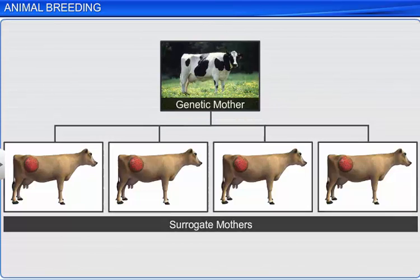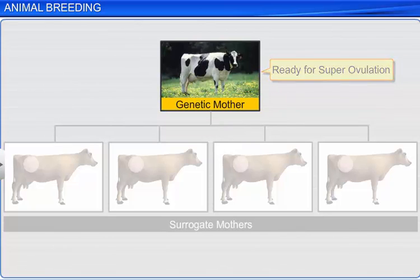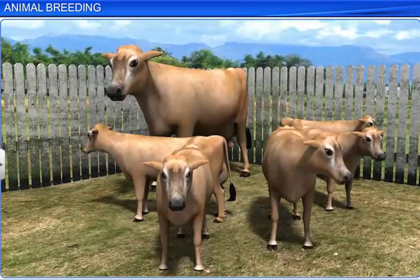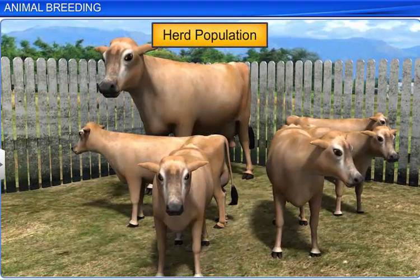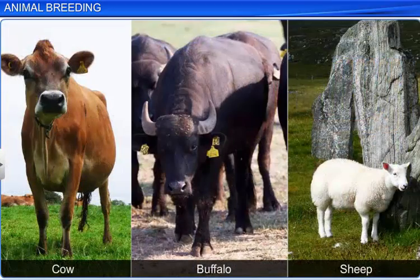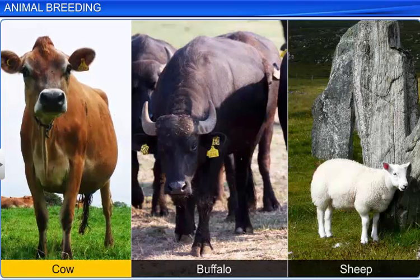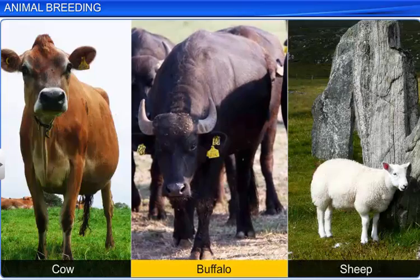The female animal can then be used for super ovulation once again. In this manner, MOET helps increase the herd population containing desirable characters in a short span of time. MOET is widely carried out in animals such as cattle, buffaloes, and sheep.